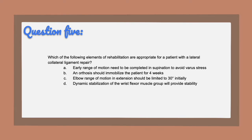Question five: which of the following elements of rehabilitation are appropriate for a patient with a lateral collateral ligament repair? A, early range of motion needs to be completed in supination to avoid varus stress. B, an orthosis should immobilize the patient for four weeks. C, elbow range of motion in extension should be limited to 30 degrees initially. D, dynamic stabilization of the wrist flexor muscle group will provide stability.